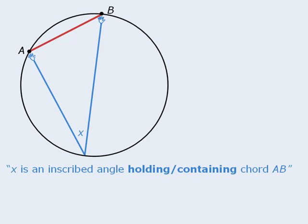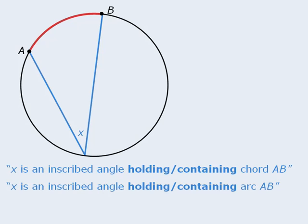So if we imagine that the ends of the two line segments have hands, angle X can be thought of as holding chord AB. Now please note that if we remove this chord, we can see that angle X is still holding arc AB. So we can say that angle X is an inscribed angle holding arc AB. If an inscribed angle is holding a chord, it is also holding an arc. So the properties we examine in this lesson will pertain to both chords and arcs.